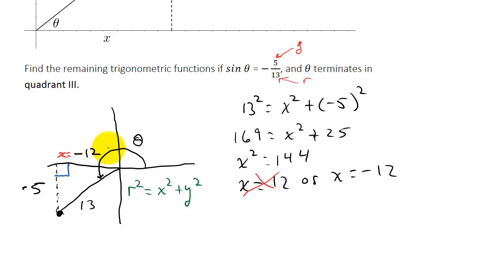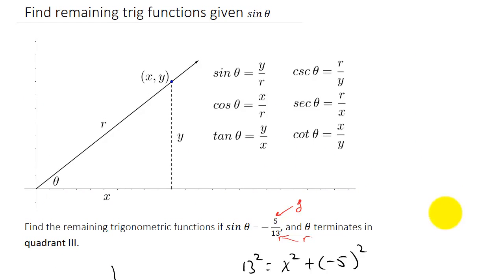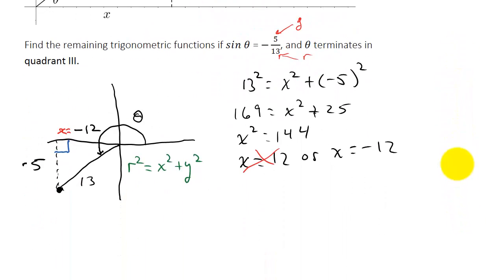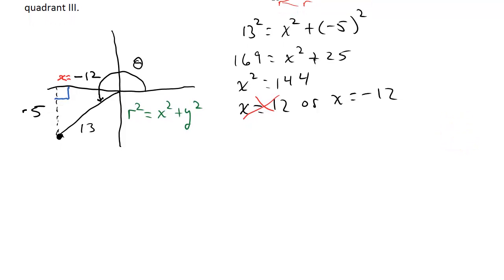Now I have x, y, and r, so I can find my remaining trig functions. Sine theta is y over r, cosine theta is x over r, tangent theta is y over x. Just remember that cosecant is the reciprocal of sine, secant is the reciprocal of cosine, and cotangent is the reciprocal of tangent.